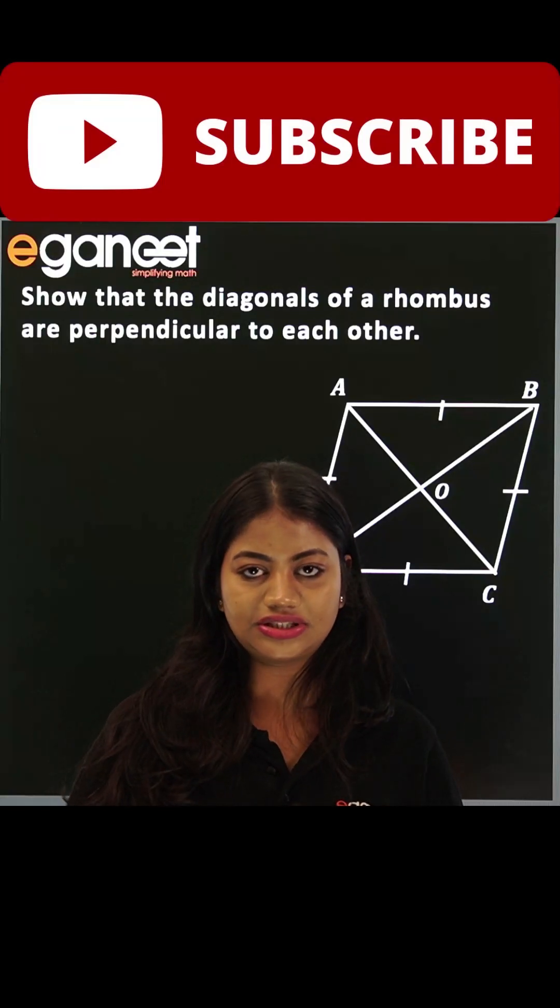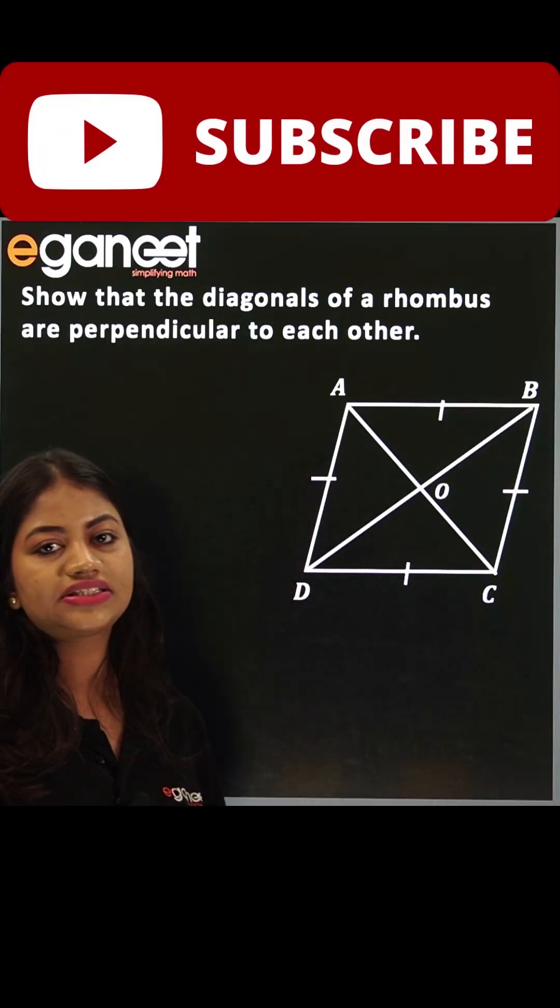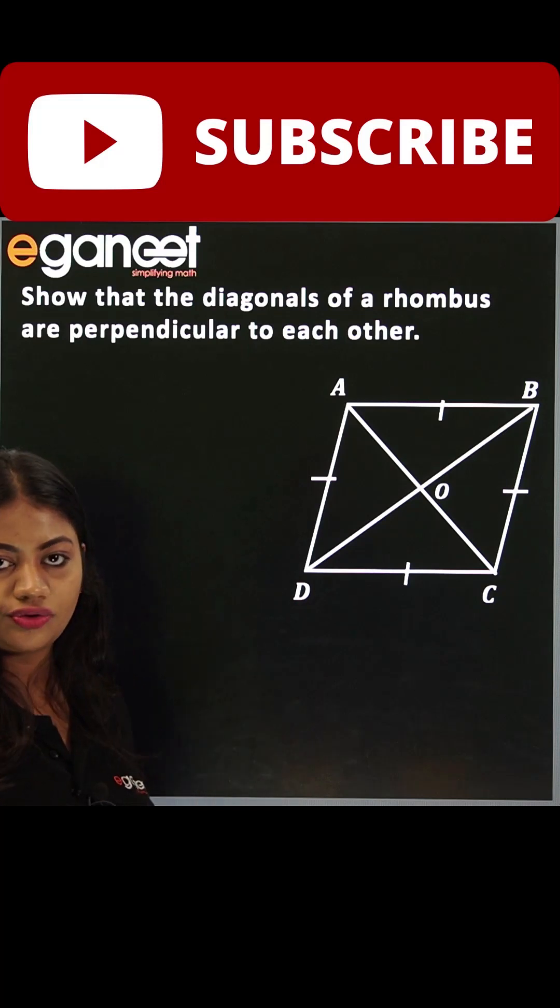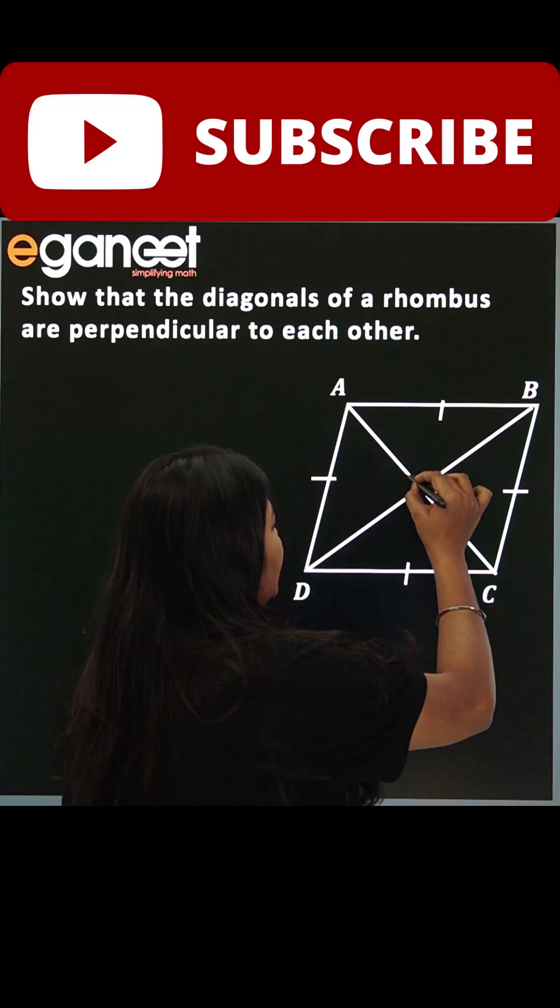Prove that diagonals of a rhombus are perpendicular to each other. For this, I have taken a rhombus ABCD with their diagonals intersecting at point O. To prove that these two diagonals are perpendicular, I need to prove either of the angles as 90 degrees.